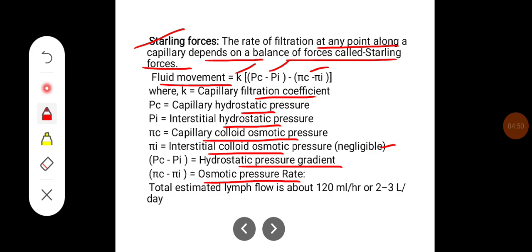So this is the hydrostatic pressure gradient and this is the osmotic pressure gradient. The total estimated lymph flow is around 120 ml per hour or 2 to 3 liters per day.